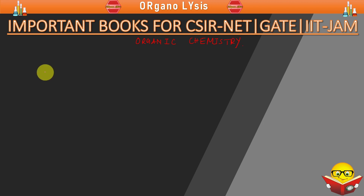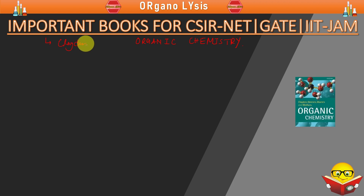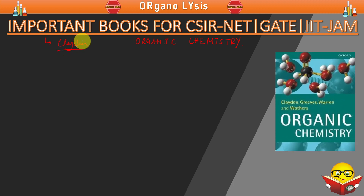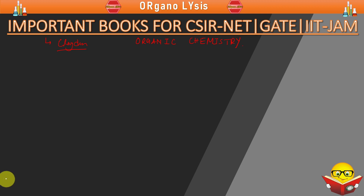If you are an IIT JAM aspirant, then for organic chemistry you should refer Clayden. This book is very important and it is important for all kinds of examinations like CSIR, NGATE, IIT GATE, or JAM. Clayden is very much important and it is more than sufficient for the IIT JAM examination.